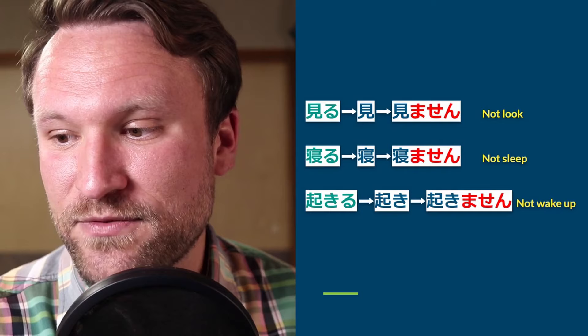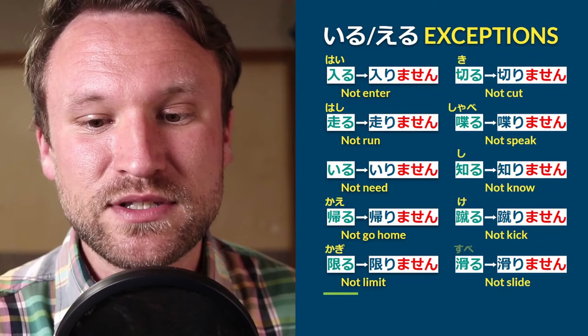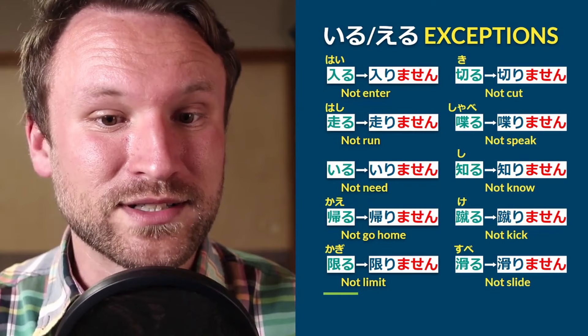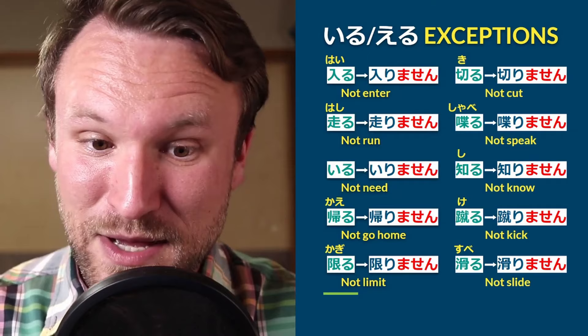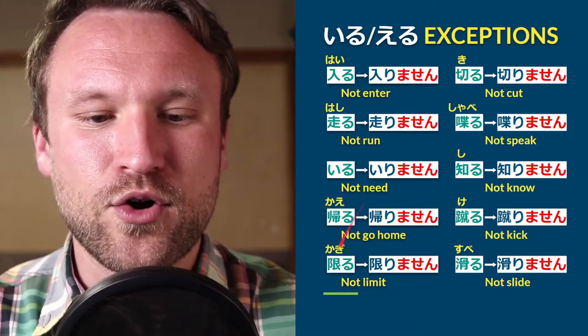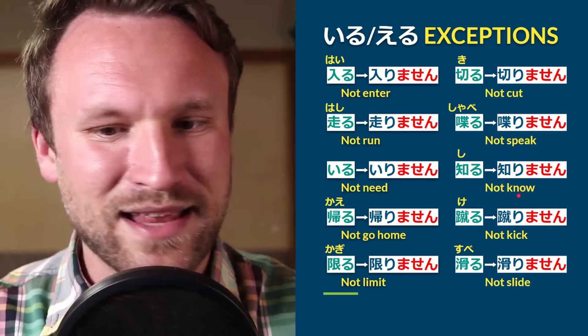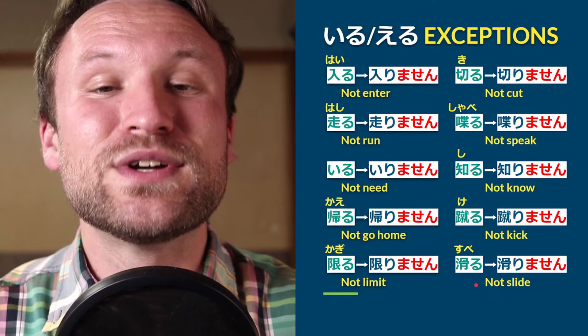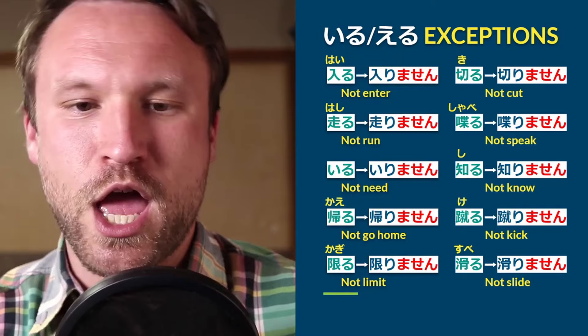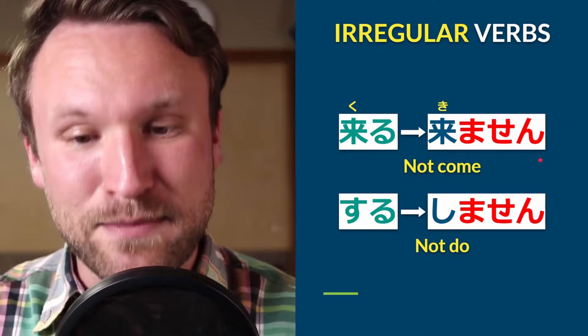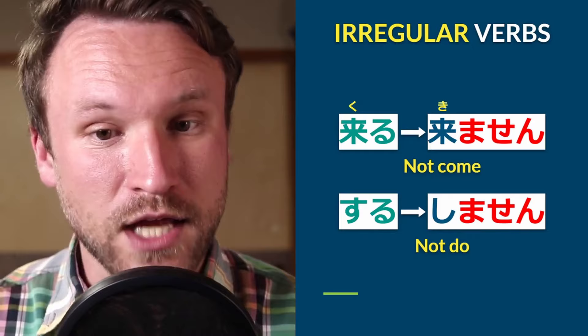The same 10 exceptions exist for the masen form — unfortunately you just have to memorize them. Most are common enough that you'll use them a lot and get them quickly. For example: kairimasu→kairimasen (not go home); kirimasen (not cut); shaberimasu→shaberimasen (not speak); shirimasen (I don't know). The irregular verbs also apply: kuru→kimasen (not come); suru→shimasen (not do).